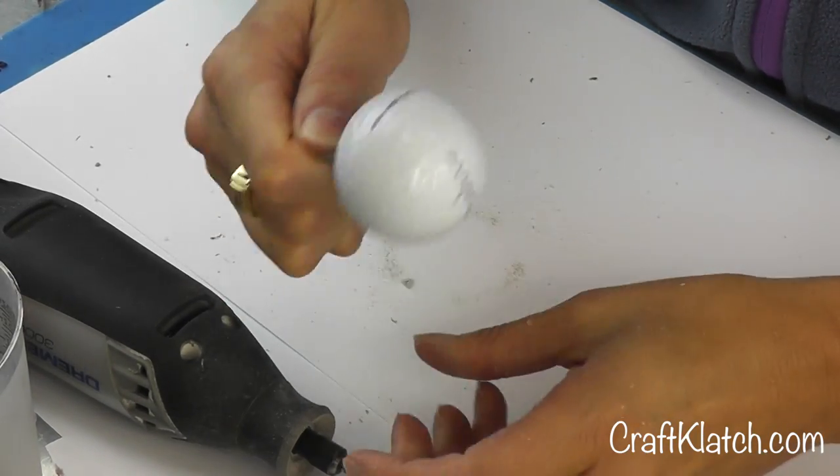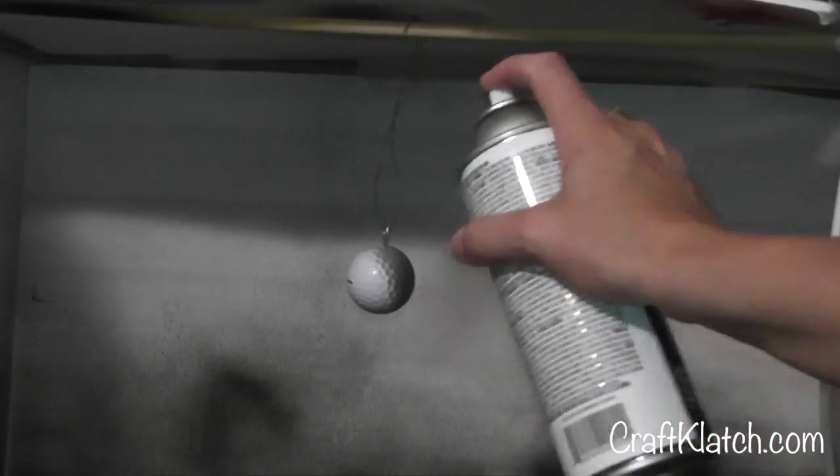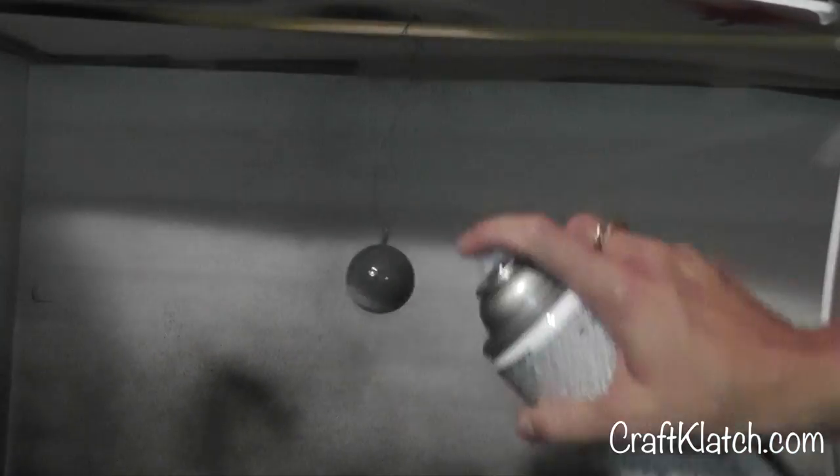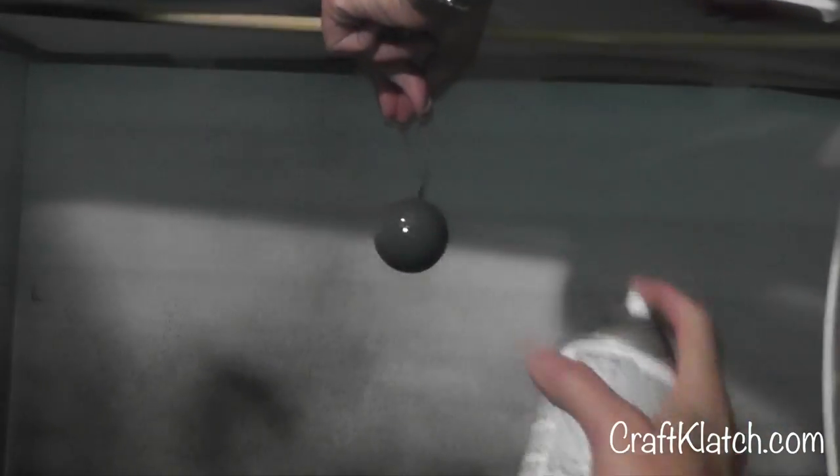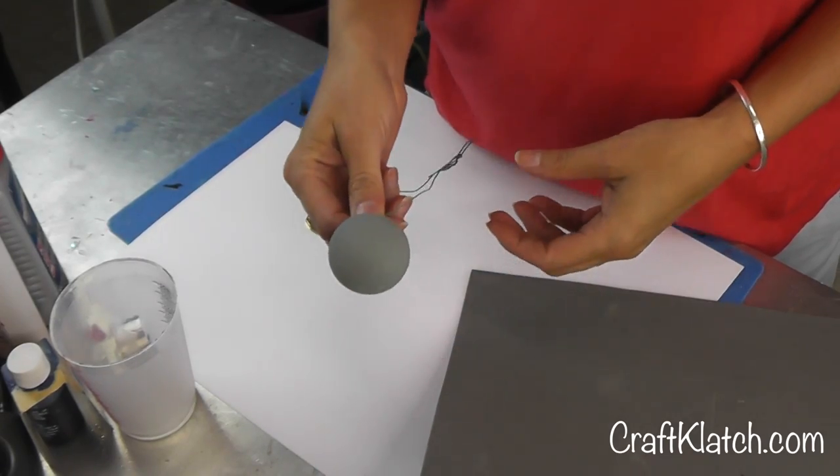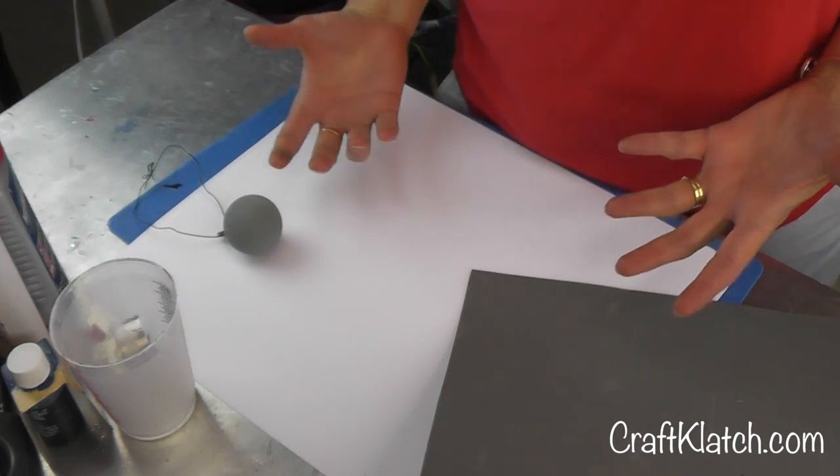I'm going to take it outside and spray paint it. Okay, our golf ball is painted gray and now all we need are his parts.